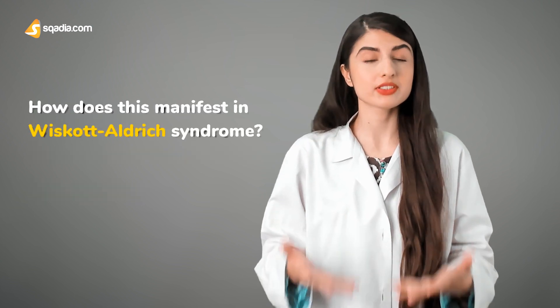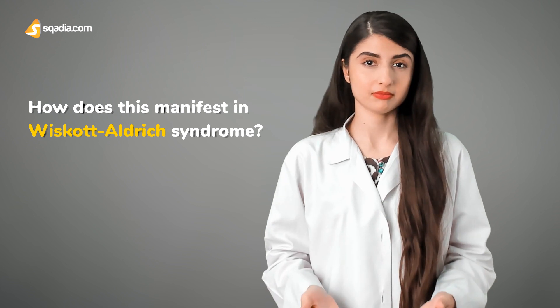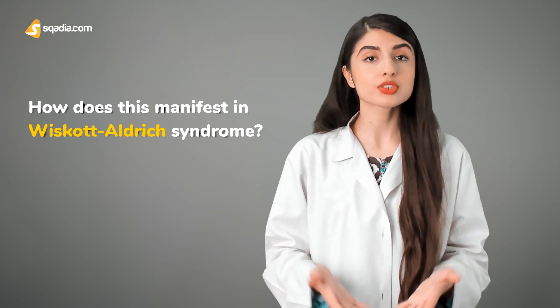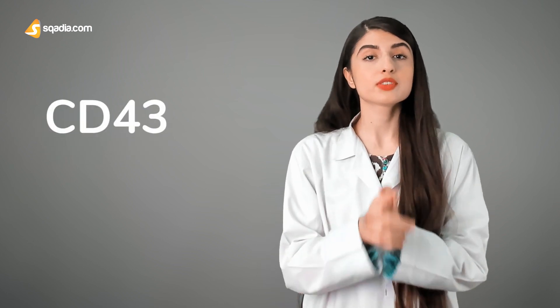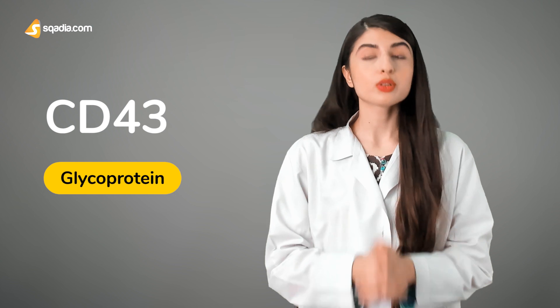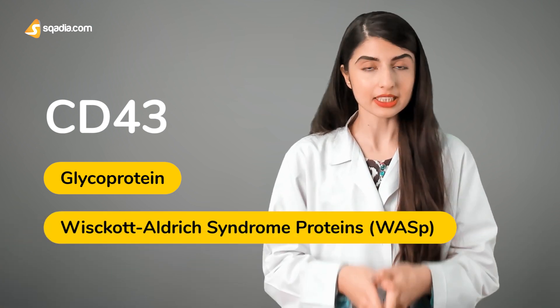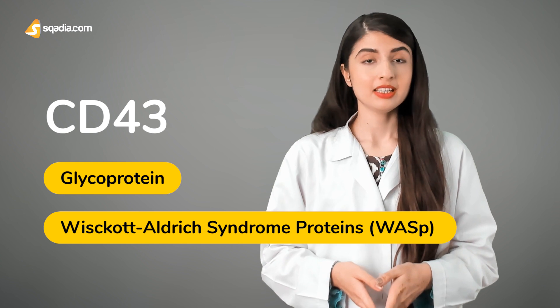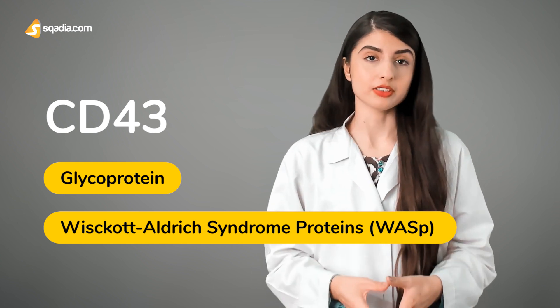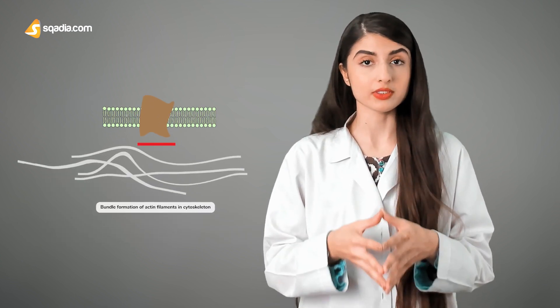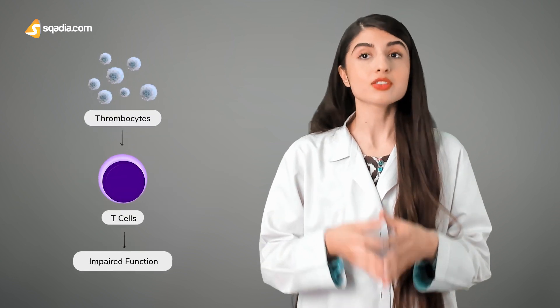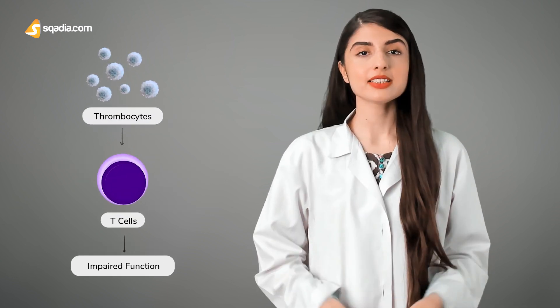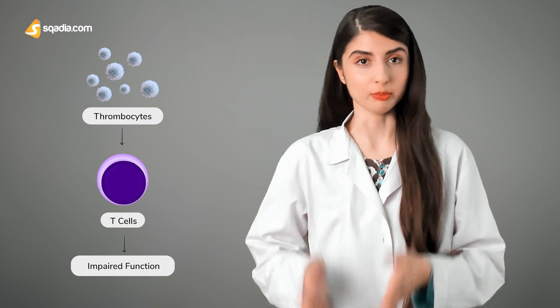How does this manifest in Wiskott-Aldrich syndrome? This is caused by the altered expression of CD43. This gene encodes for a glycoprotein or Wiskott-Aldrich syndrome proteins, or WASPs. These form an important part of the cytoskeleton of immune cells like T cells and thrombocytes. This leads to defective actin bundle formation.